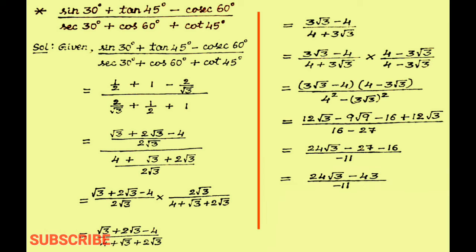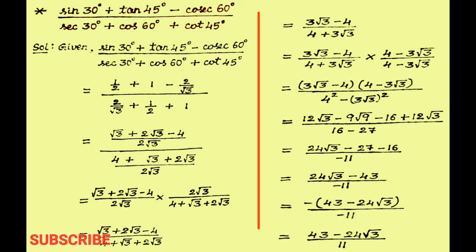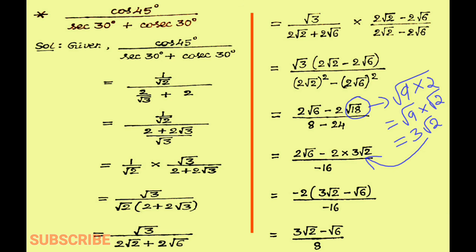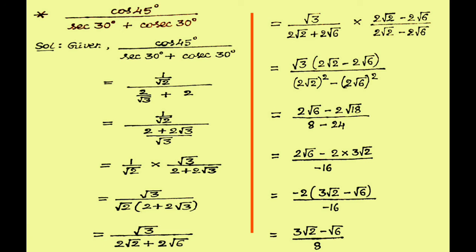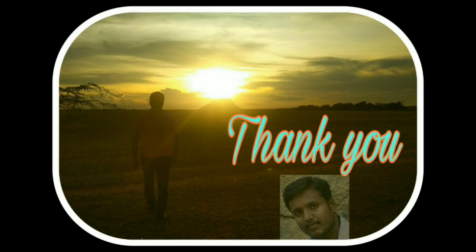In the next step we get 24 root 3 minus 43, whole divided by minus 11. In the numerator take minus sign as common, so we get minus of 43 minus 24 root 3, whole divided by minus 11. Now minus and minus get cancelled, so we get 43 minus 24 root 3, whole divided by 11. This is another problem solved by the same method — pause the video and see.